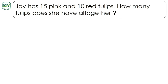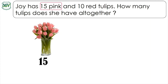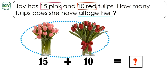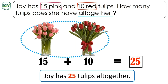Now, let's solve the created addition story. We understand that Joy has 15 pink and 10 red tulips. The question is, how many tulips does she have all together? Let's add: 15 plus 10 equals 25. Therefore, Joy has 25 tulips all together.